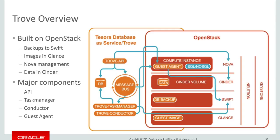The Task Manager will also reach out to the Guest Agent, which is the piece of Trove that resides on each machine instance. So if a request comes in to back up a specific instance, it will pass that request to the Guest Agent running on that particular machine, and the Guest Agent will understand exactly how to execute the backup, execute the job, and pass the results back to the Task Manager.